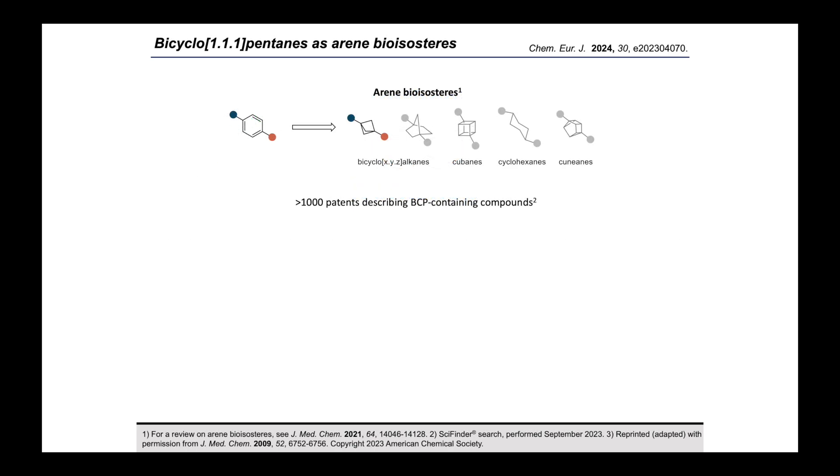We saw the importance of BCPs as bioisosteres for aromatic rings in a recent research spotlight episode by Isaac Yu from the Hartwig Group. In fact, bicyclopentanes are only one of a whole series of proposed bioisosteres for arenes, but arguably they've received the most attention in the past 5 or 10 years. That being said, all of these fragments are saturated, they have a high content of approximately sp3 hybridized carbon atoms, and they are all more three-dimensional than the parent arene.